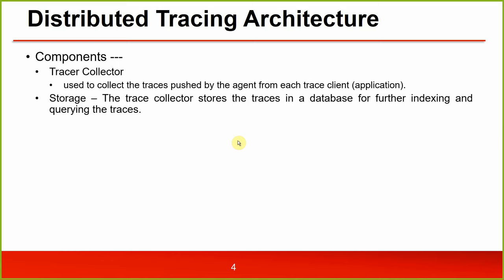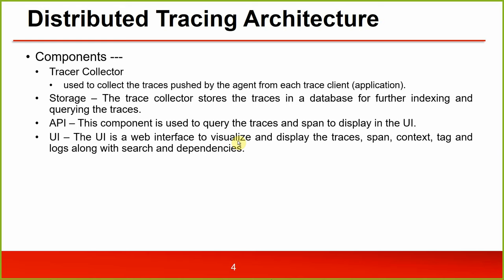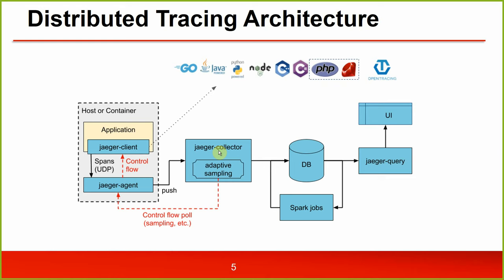Then we have the API - this component is used to query the traces and spans to display them in the user interface. The last component is the user interface - the web interface we have seen in our hot ride on demand application - used to visualize traces, spans, contexts, tags, and logs along with search and dependencies. All these components were there: traces, spans, contacts, tags, and logs - everything was there, including complete visualization.